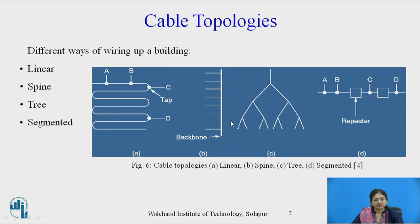The next type of topology is spine topology. Here the vertical spine cable is run from the basement to the roof, whereas the horizontal cable is attached to this vertical cable from floor to floor with the help of a repeater or amplifier.